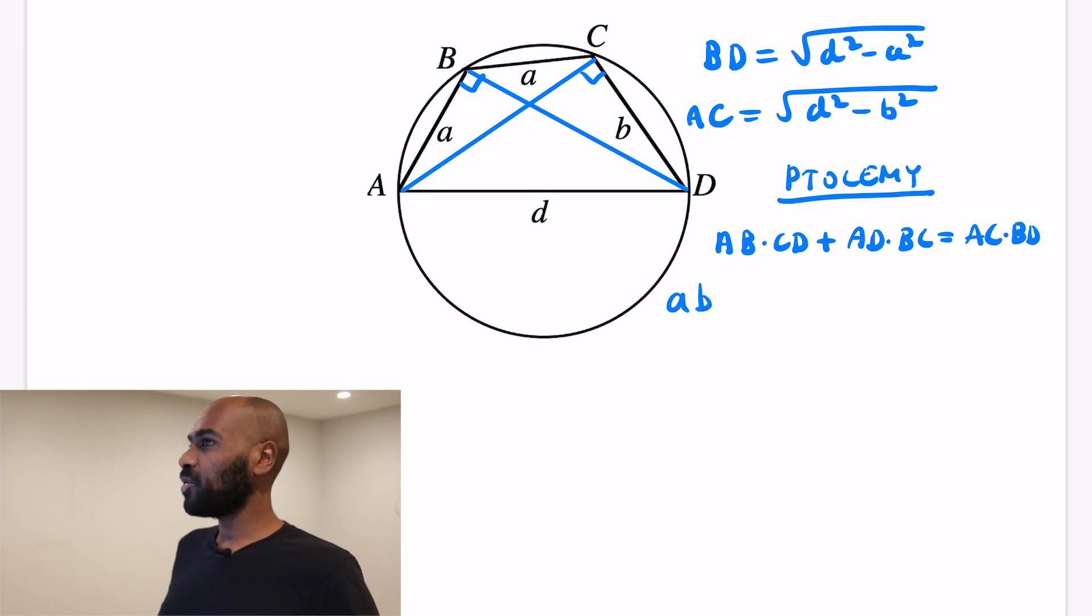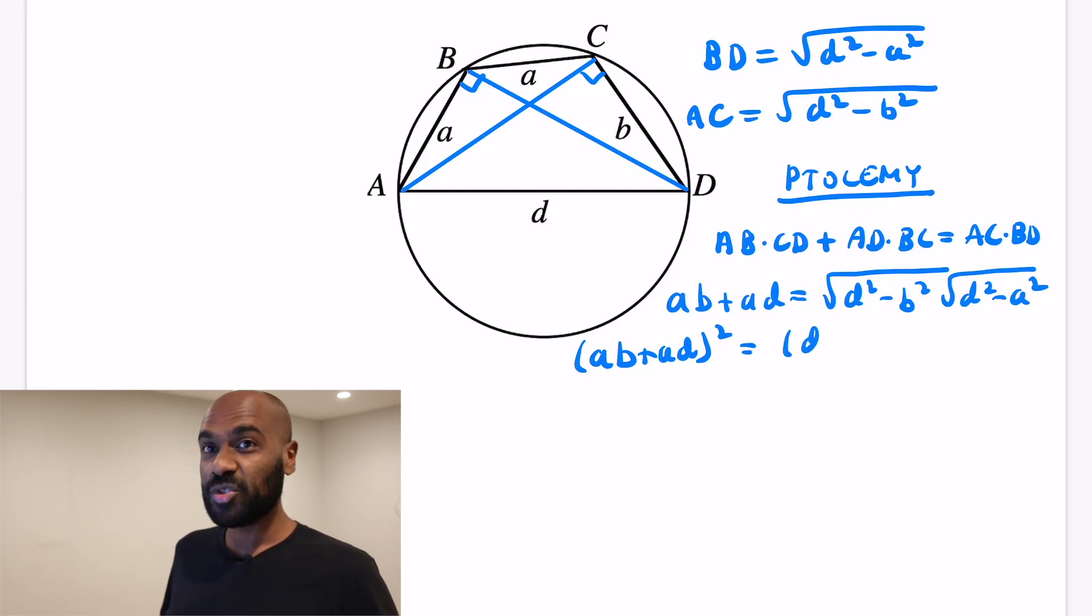So AB is a, and CD is b, and then we get plus AD, and then multiplied by the product of these lengths, which we wrote down above, the square root of d squared minus b squared, and the square root of d squared minus a squared. So then if we square the left-hand side, that should equal the product of the things inside of the square roots on the right-hand side. So hopefully if we rearrange this algebraic expression, we get exactly the thing we expected from before.